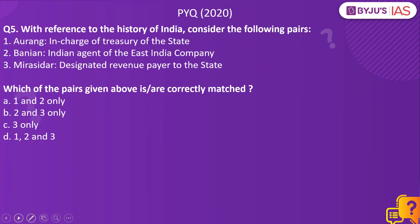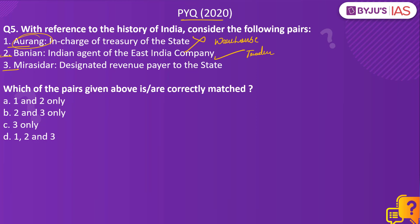Now let us take up a previous year question from the Prelims 2020 paper. With reference to the history of India, consider the following pairs: one — Aurang: in charge of treasury of the state; two — Banian: Indian agent of the East India Company; three — Mirasidar: designated revenue payer to the state. The term Aurang is a Persian term for warehouse, so pair one is incorrect — it is not a person in charge of the treasury. Banian was a term used for agents or traders of the East India Company, so pair two is correct. Mirasidars were owners of the land and also designated revenue payers to the state, so pair three is correct. The right answer is option B: two and three only.